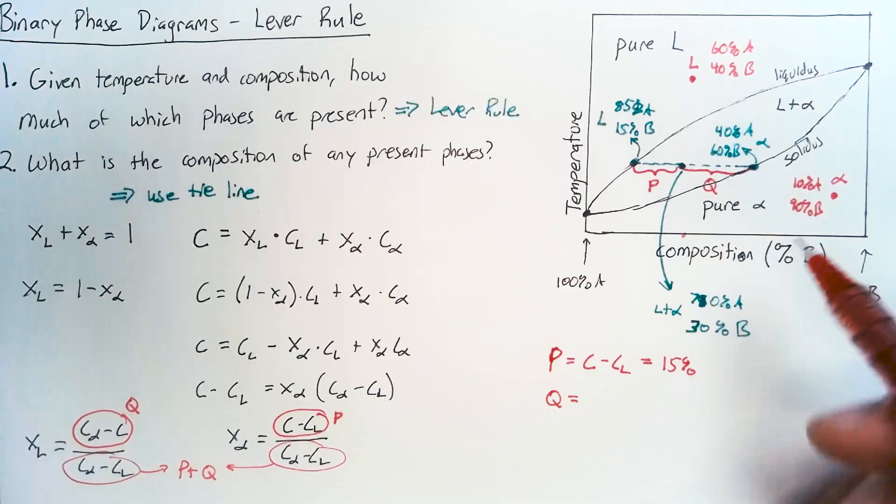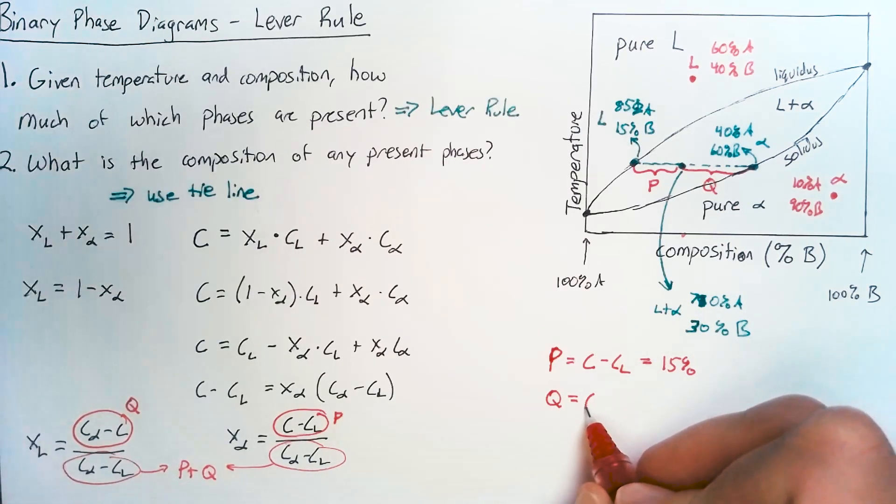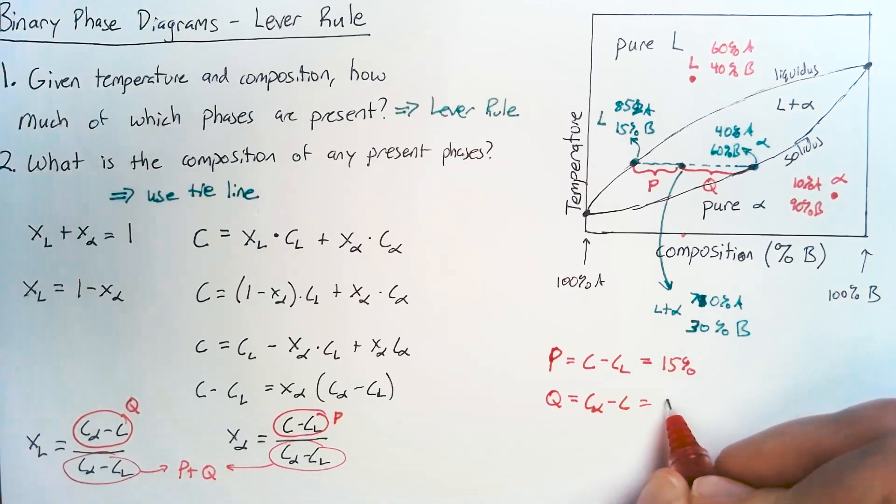Q is going to be 30%, right? 40 minus 70 or 60 minus 30. So this is C_alpha minus C, which is 30%.